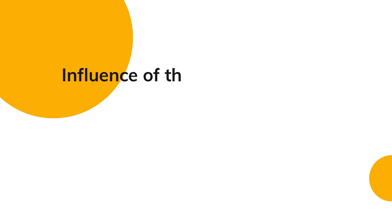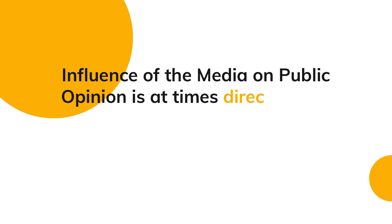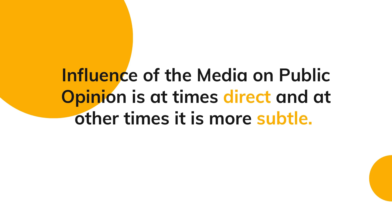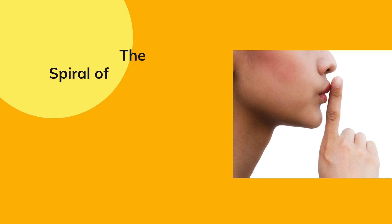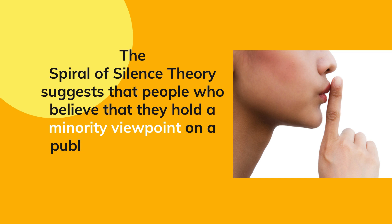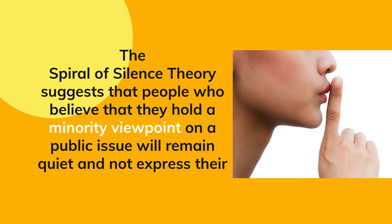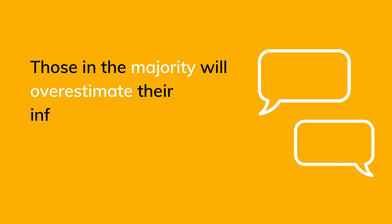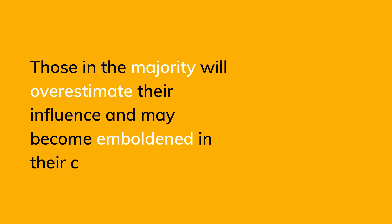The influence of media on public opinion is at times direct, at other times subtle. The main contention of the Spiral of Silence theory is that people who consider their viewpoint to be non-dominant, or who think they hold a minority viewpoint, will not express this viewpoint publicly — they will remain quiet. People who think they hold the dominant or majority viewpoint may overestimate their influence and become emboldened to loudly proclaim that viewpoint.